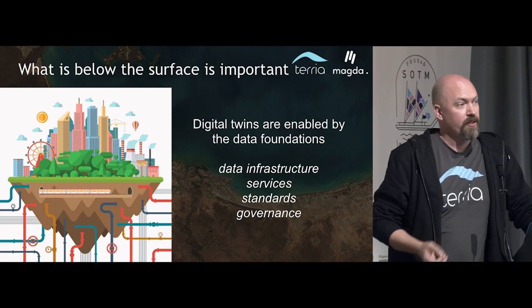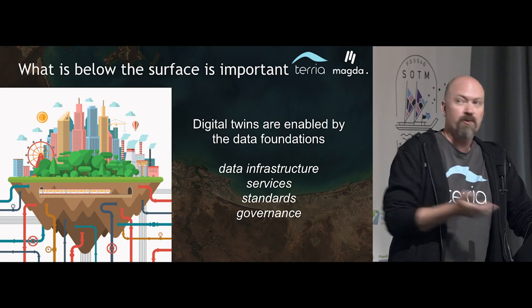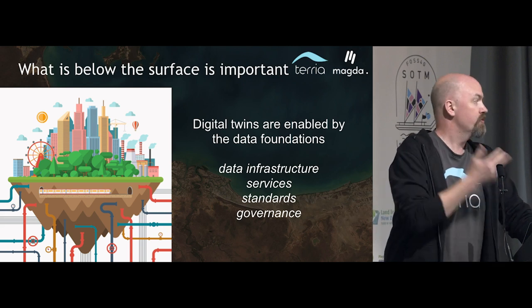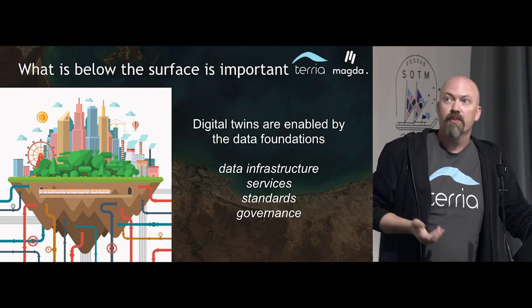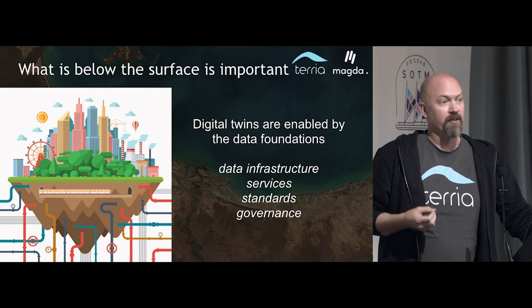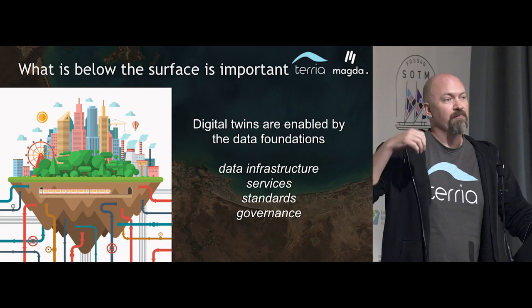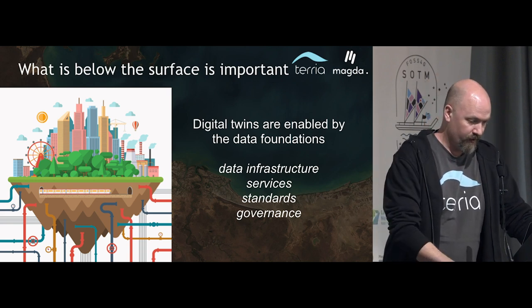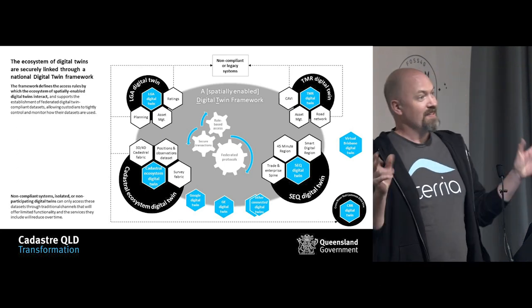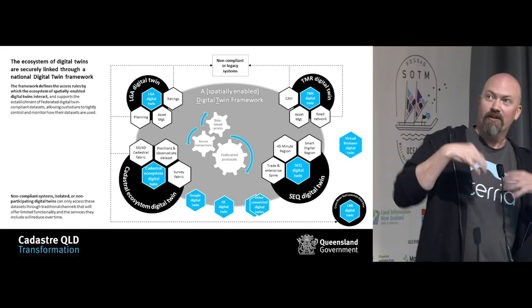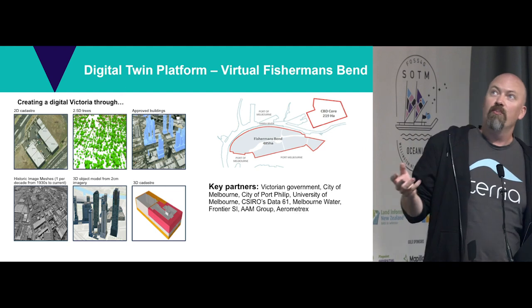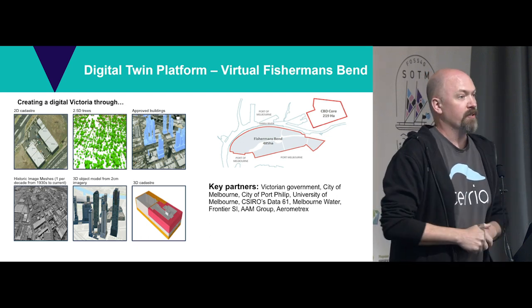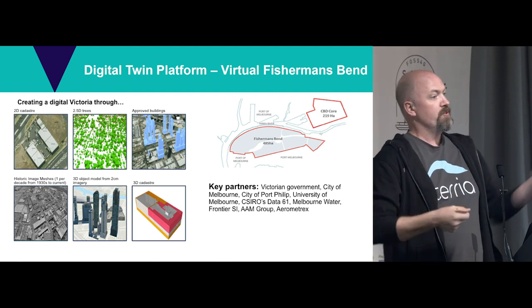The reason we have to work with all these collaborators is that what's below the surface of a digital twin is important. We have to figure out what the data infrastructure should look like, what the services, standards, and governance of these data sets and digital twins should be. We can build something and we love building stuff, but if it doesn't mean that other people can use it in their digital twins, it's kind of pointless. So we come up with fancy diagrams with puzzle pieces showing how digital twins can work together — for example, to interoperate with the Fisherman's Bend digital twin, which is not based on Terria and Magda, but we want to be able to use each other's services.